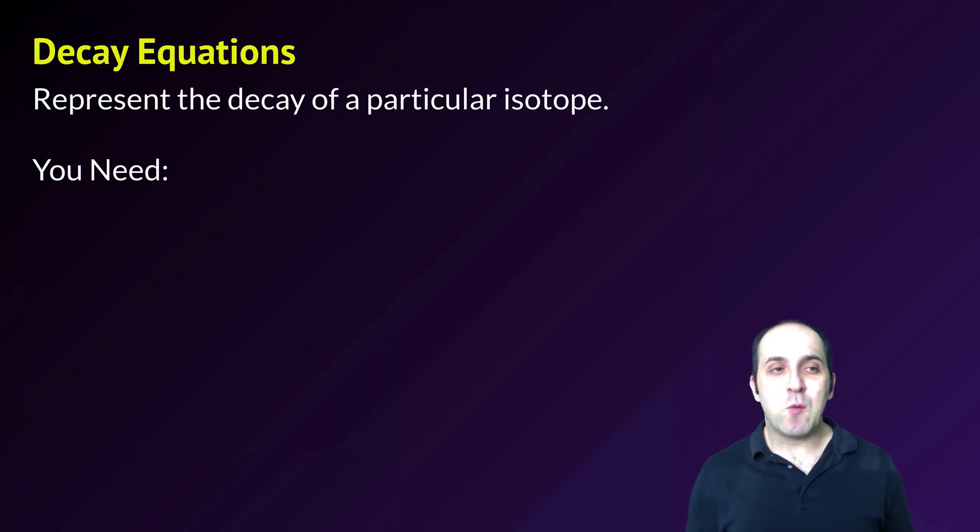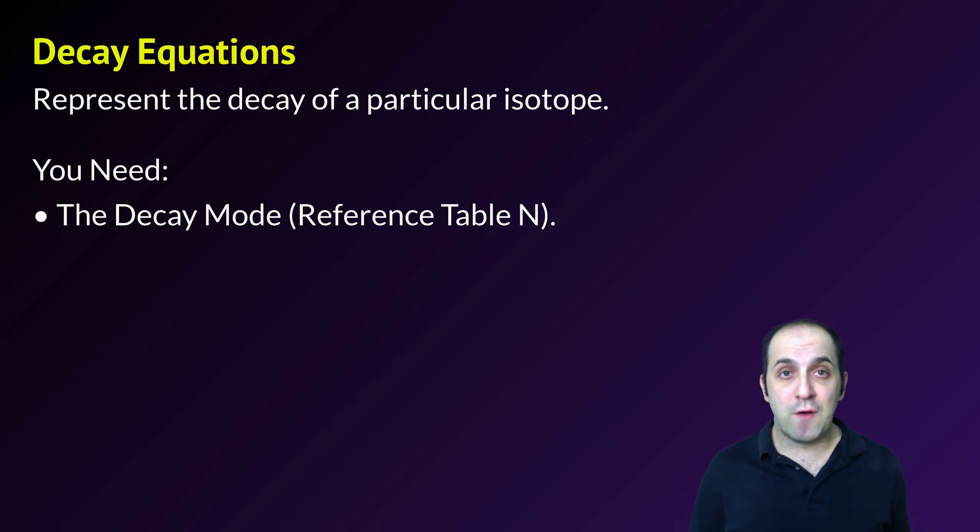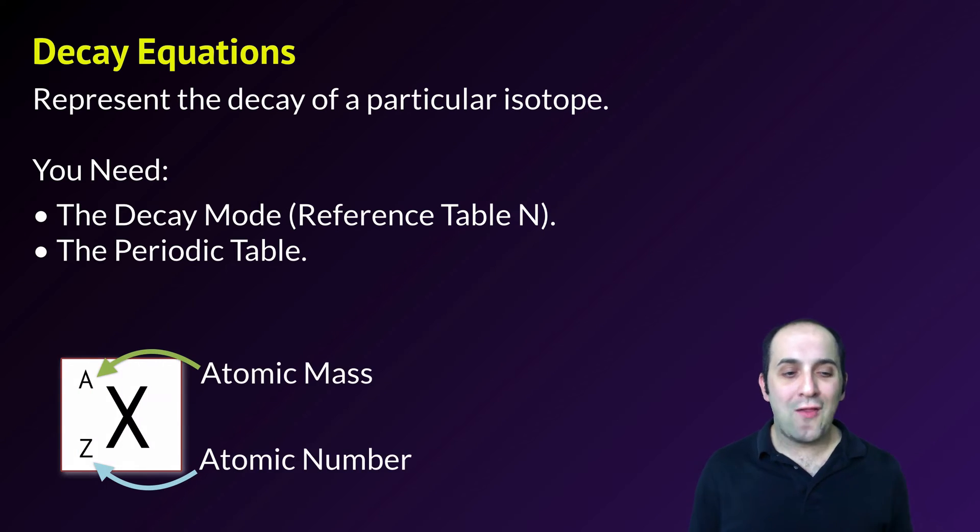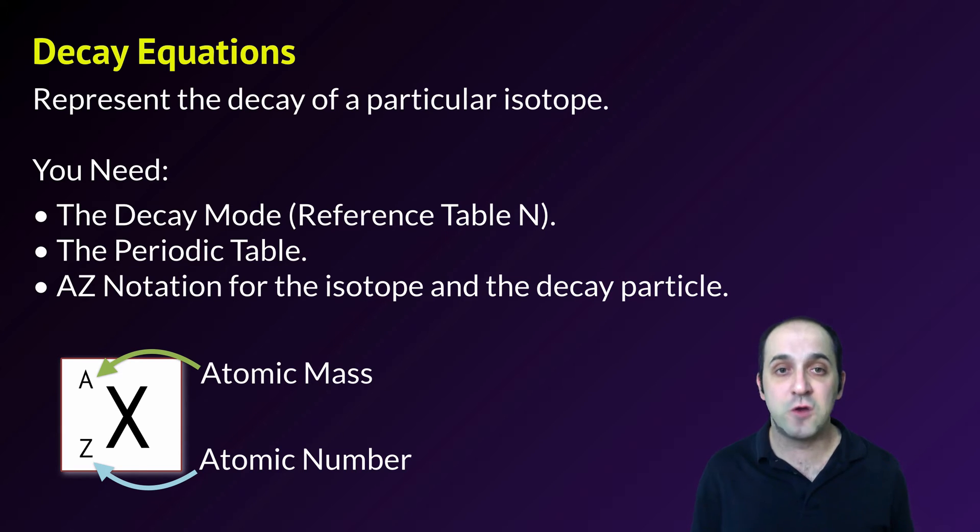When we write a decay equation, we're going to represent the decay of a particular isotope. You're going to need the decay mode from reference table N, the periodic table, and AZ notation. The A is the atomic mass of the isotope, and the Z is the atomic number. Atomic mass gets written on the top left, atomic number on the bottom left.